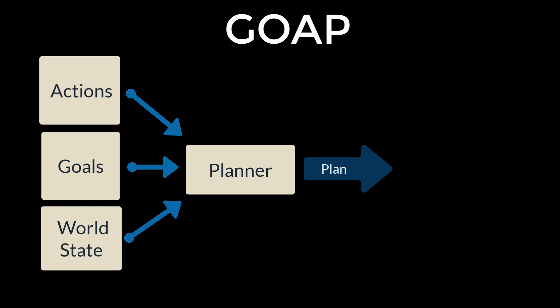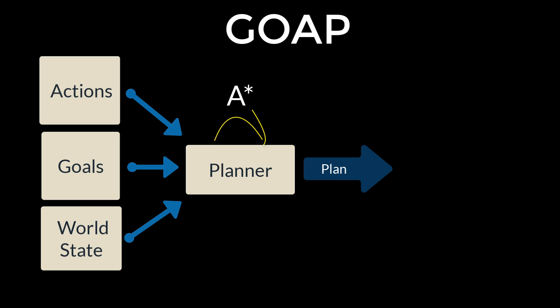A conceptualisation of a GOAP system looks like this, with actions, goals and world states being fed into a planner. The planner chains the actions together according to the goals and starting states to determine which plans are achievable. The planner uses the A* algorithm to find the best plan using the cost values. Once a plan has been generated, the agent goes about achieving it using a very simple finite state machine that basically moves the agent to where the action needs to take place and then performs the action. The agent works its way along the chain of actions until a goal has been achieved.